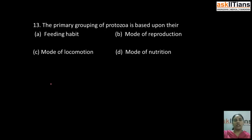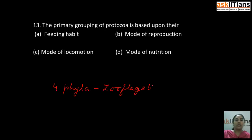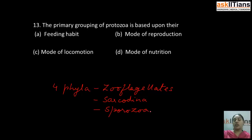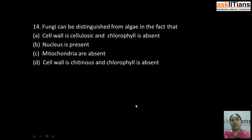Our next question is: the primary grouping of protozoa is based upon their — A) feeding habit, B) mode of reproduction, C) mode of locomotion, D) mode of nutrition. The correct answer is C: mode of locomotion. Protozoa is divided into four phyla: zoo flagellates (having flagella), Sarcodina (having pseudopodia), Sporozoa (no locomotory organs, parasitic), and Ciliata (having cilia).